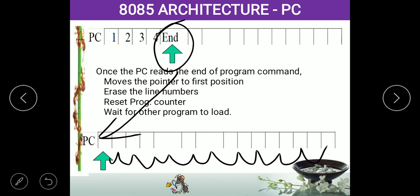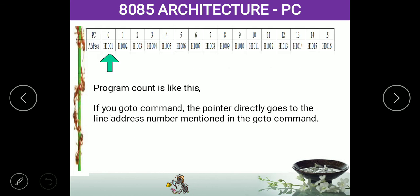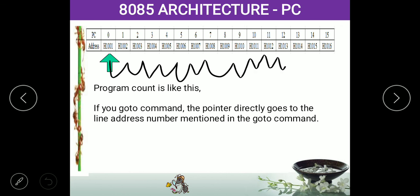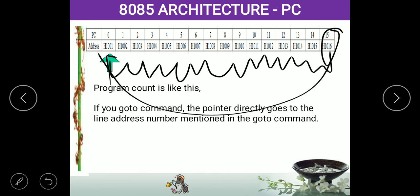Whatever addresses are stored in the program counter will be executed by the processor. Once all operations are executed, it resets to 0, erasing all data. It reads the data stored at each address in sequence only — once it reaches the last element, it resets to the first. This is what we call the program counter — based on the program counter only, the processor operates.